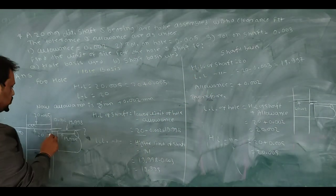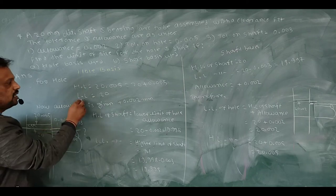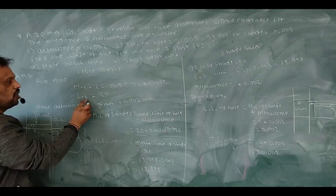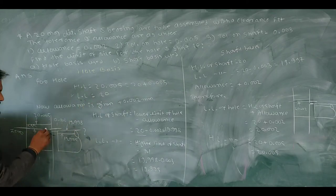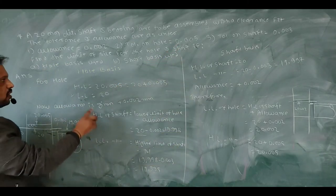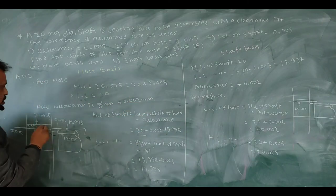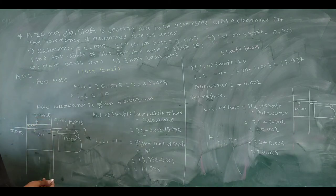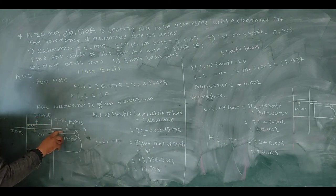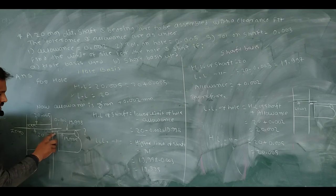From that, in the hole basis system, the hole lower limit is 20mm. Why 20? Because in hole basis system, the hole lower deviation is zero, so the hole lower limit equals the nominal size of 20mm. For calculating the upper limit of hole, tolerance of 0.005 is given, so: 20 + 0.005 = 20.005mm. Now I have to calculate the shaft upper limit and lower limit. The allowance given is 0.002 between these two assembly parts.